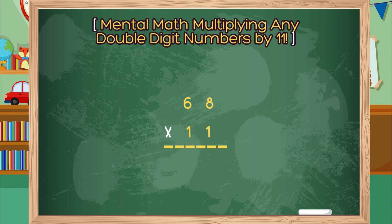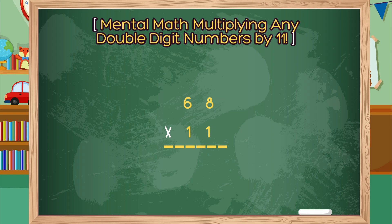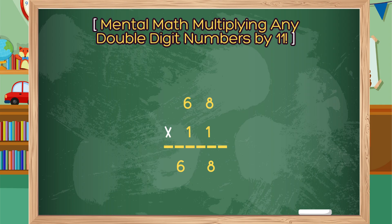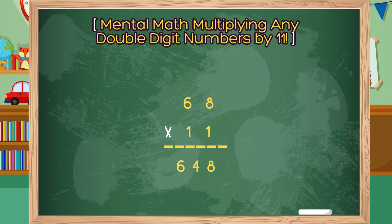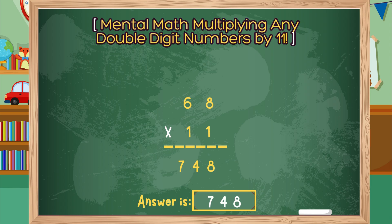Last one. 68 times 11. If the sum of 6 plus 8 is 10 or more, then carry the digit over to the leftmost digit and add it. Step 1: Separate the digits of 68 and place them in the product area. Step 2: Add 6 and 8 together, which equals 14. Step 3: Insert the 4 into the sum between the 6 and the 8 in the product, and then carry the 1 to the 6 in the product. Add 1 plus 6, which equals 7. Your answer is 748.